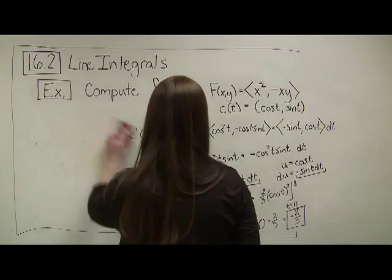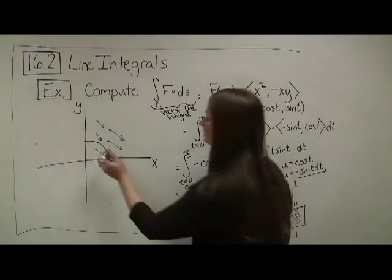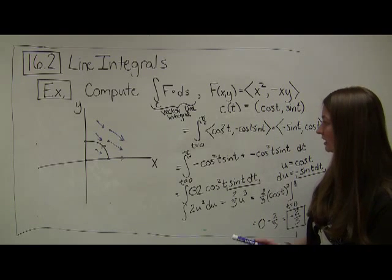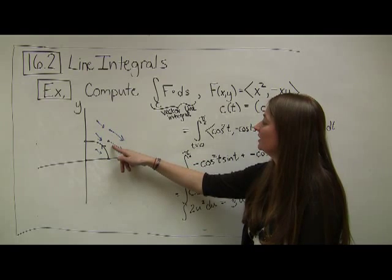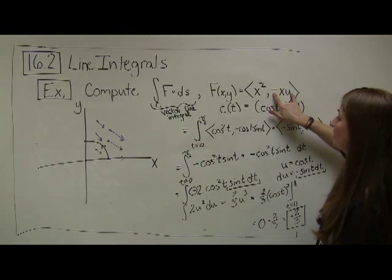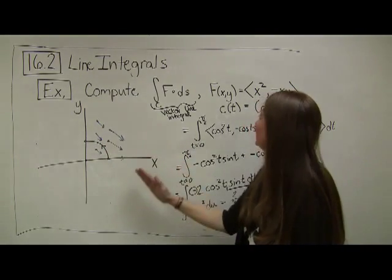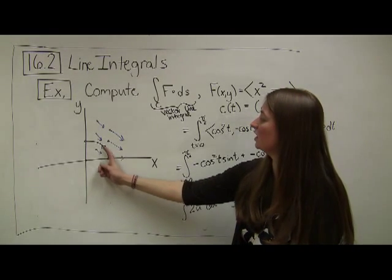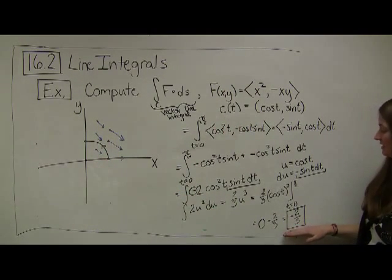Let's take a quick geometric look. The vector field can be explored with technology, but I've plotted some vector field outputs as blue arrows. The y component is negative xy, and in the first quadrant both x and y are positive, so the y components point down while the x components are squared and always move positively. So it makes sense geometrically that traveling along this arc gives a negative value.